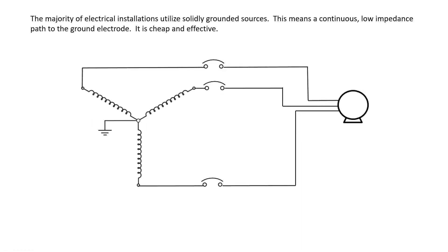The majority of electrical installations utilize solidly grounded sources, and what this means is we have a continuous low-impedance path to the ground electrode. It is cheap, and it is effective.